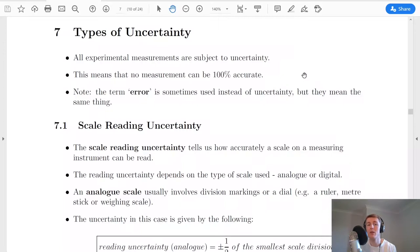Hey folks, how's it going? In this video I'm going to give you an overview of the types of uncertainty that you'll be expected to use in the advanced higher physics course, which are the scale reading uncertainty, the mean and random uncertainty, systematic uncertainty, and calibration uncertainty. So let's get started.